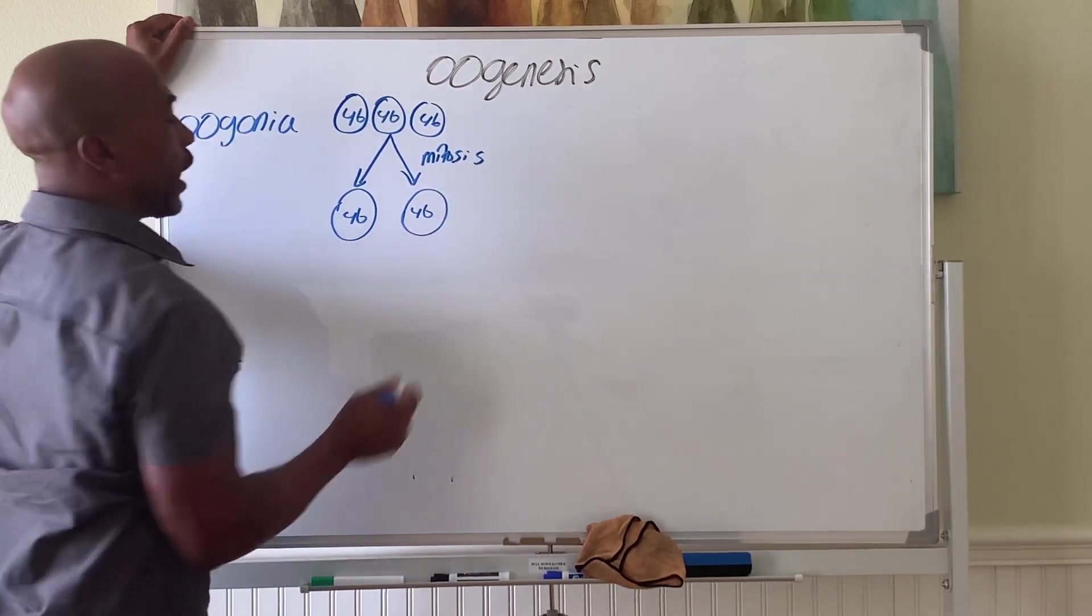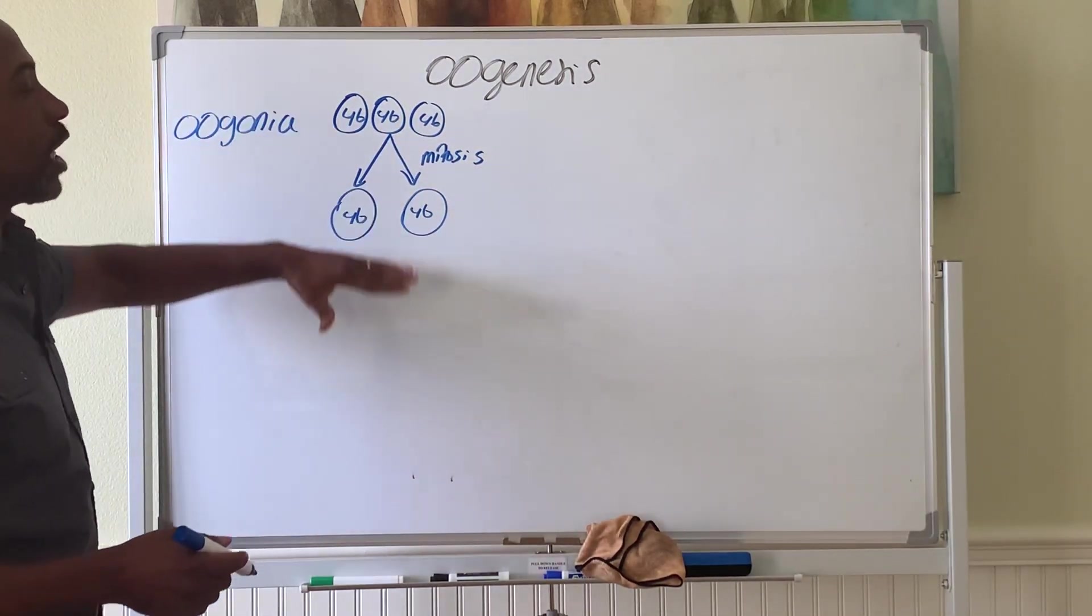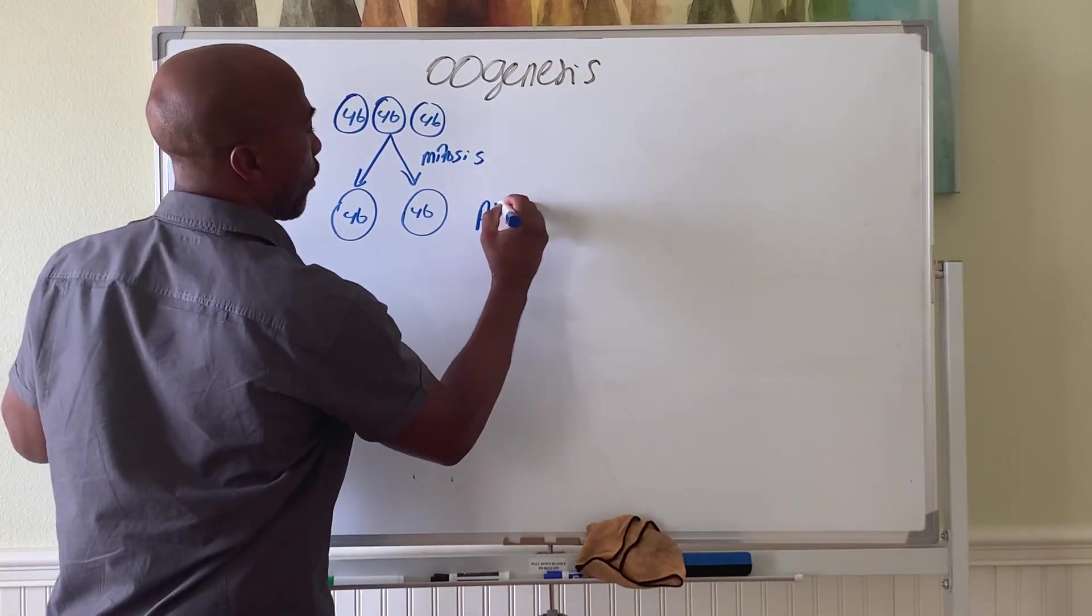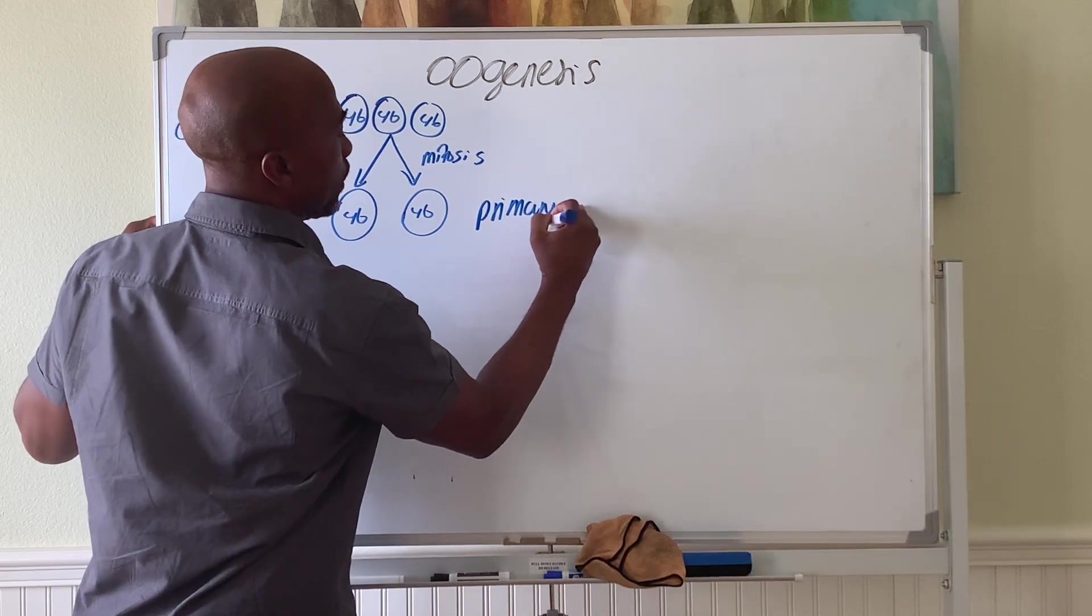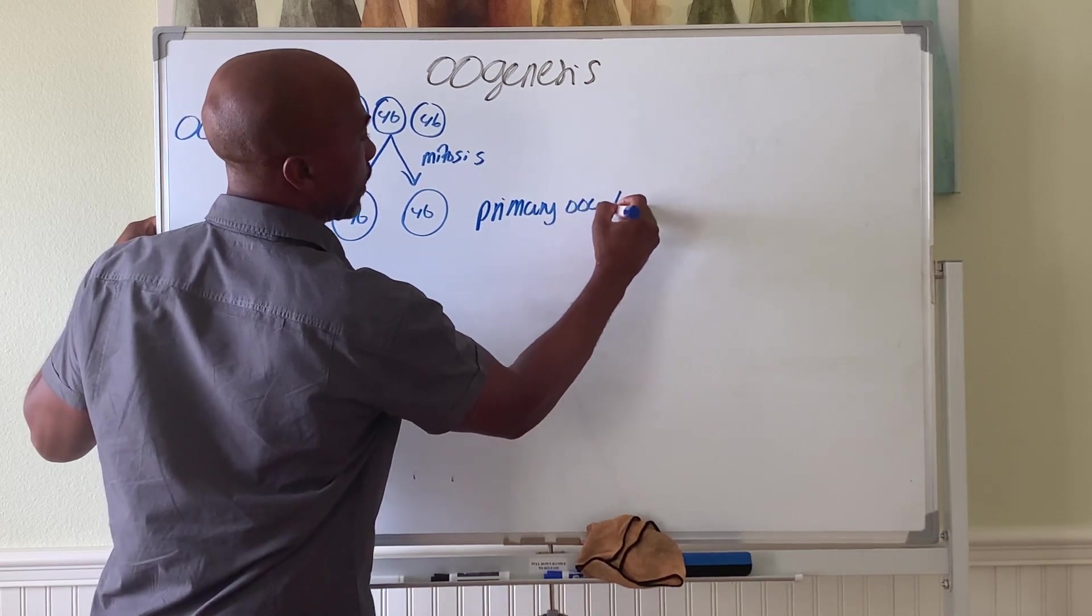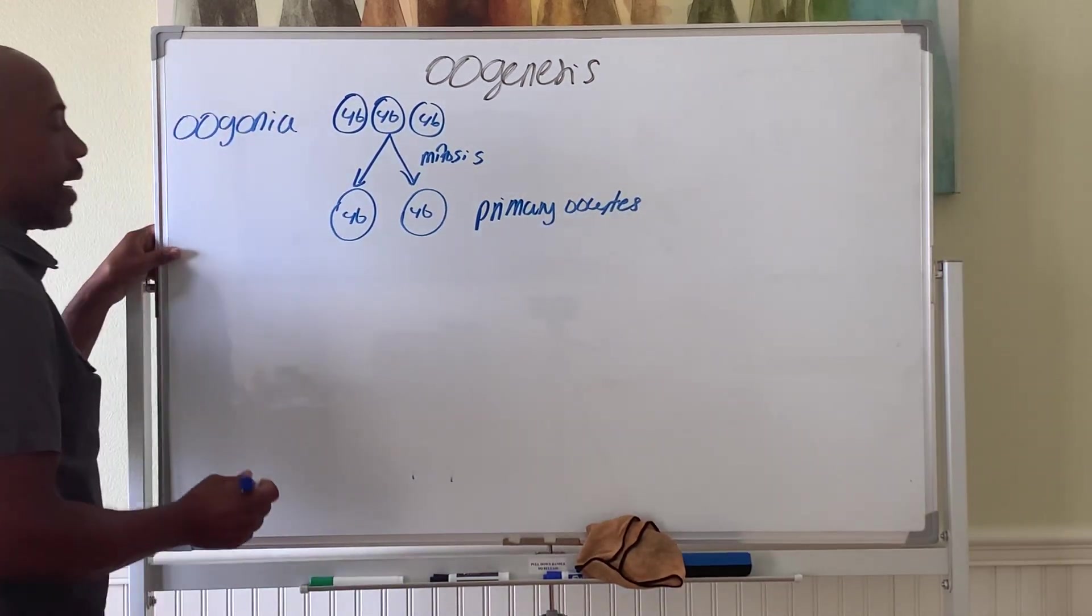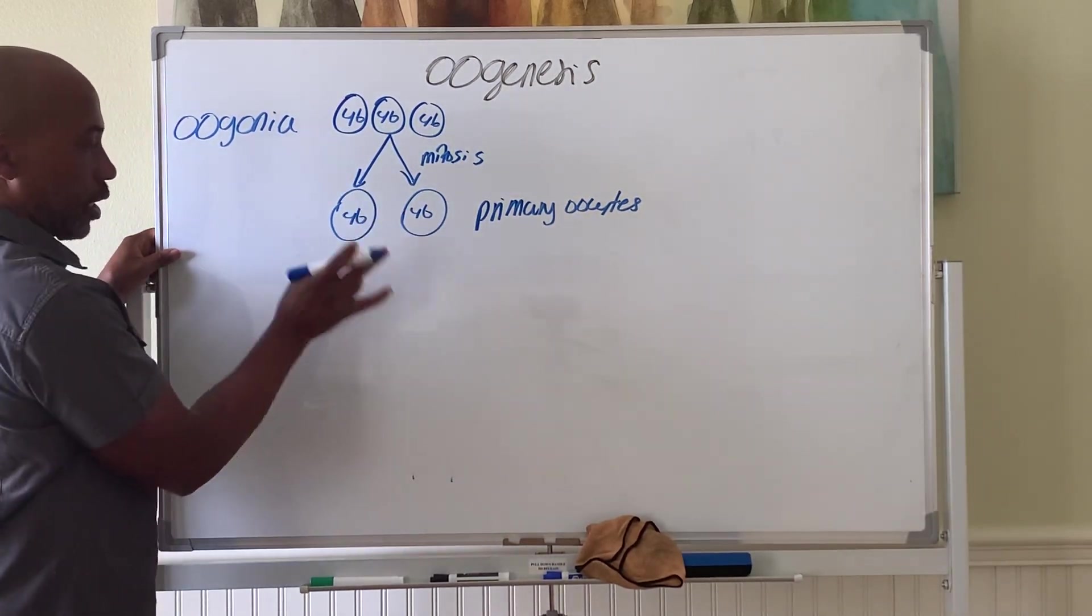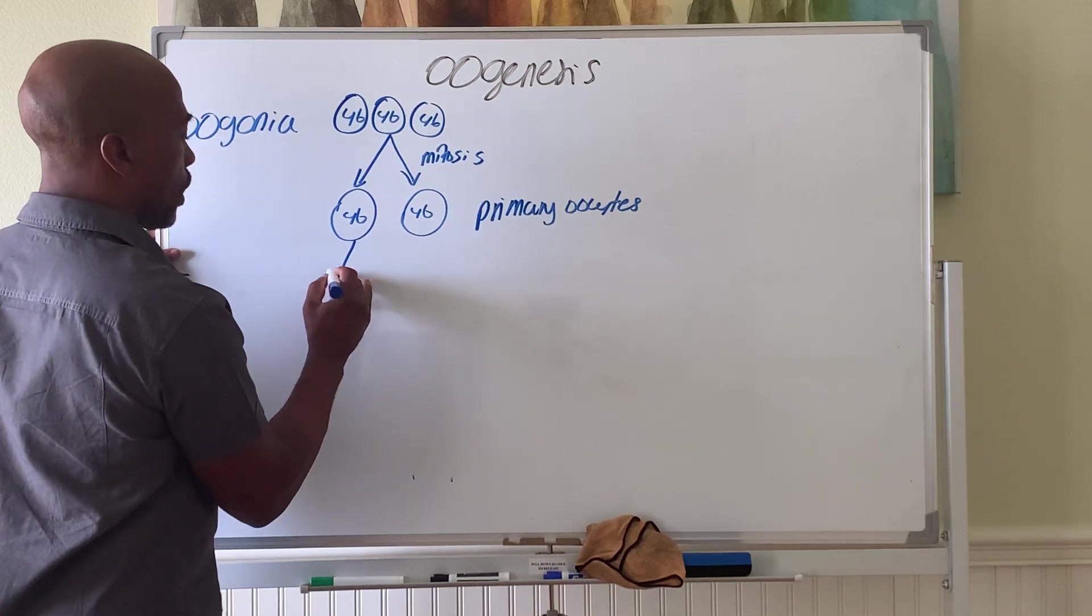So, mitosis. And unlike in the male, where one stays behind, both cells will go forward. After mitosis, these cells will now be called primary oocytes. And then, both will do, but let's pick one for simplicity. So, here we go.